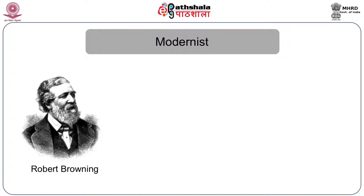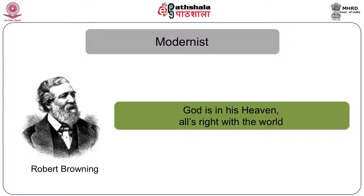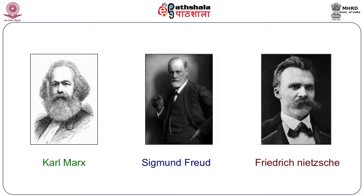What comes to mind here is a poet like Robert Browning, who had this famous remark: 'God is in heaven and all is well with the world.' This was something a modernist could not accept, because there were philosophers and thinkers who had really changed the way in which you looked at the world. Names that come to mind are Karl Marx, Sigmund Freud, and Friedrich Nietzsche — three big names. How can we talk about the modernist or modernism without thinking about these people?